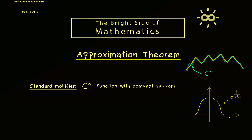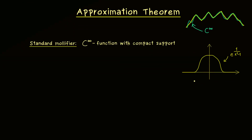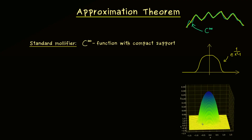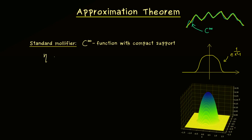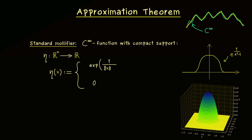This definition also works if our domain is of higher dimension. In two dimensions it would look like a graph of a function that goes smoothly into the zero function. We can immediately define such a function eta on Rn, with real-valued output. We just distinguish two cases: the first value is given by the exponential function, and the second value is zero. In the general case, what we put into the exponential function is given by 1 over the standard norm of x squared minus 1.